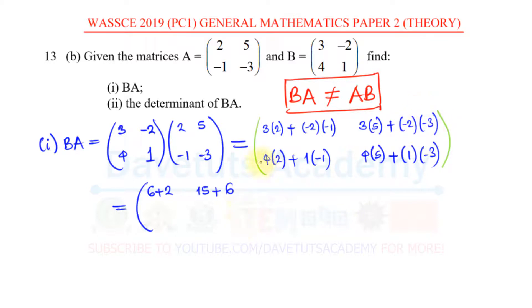Then 4 times 2, that is 8, 1 times minus 1, that is minus 1, so we have 8 minus 1. And here, 4 times 5, that is 20, 1 times minus 3, that is minus 3. So, if you have to get that, 6 plus 2 is 8, 15 plus 6 is 21, 8 minus 1 is 7, and 20 minus 3 is 17.